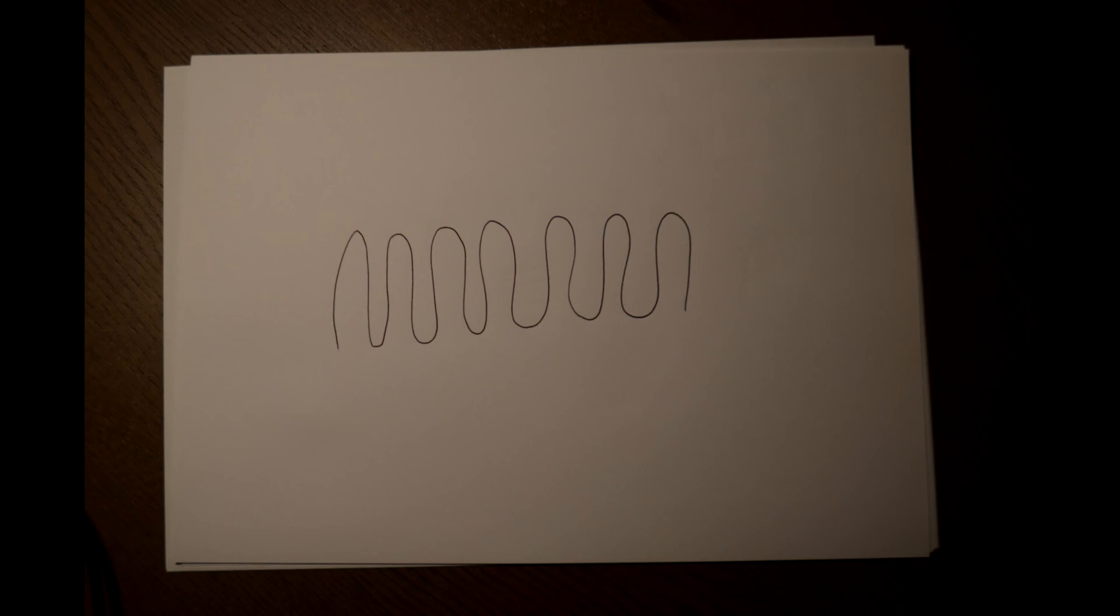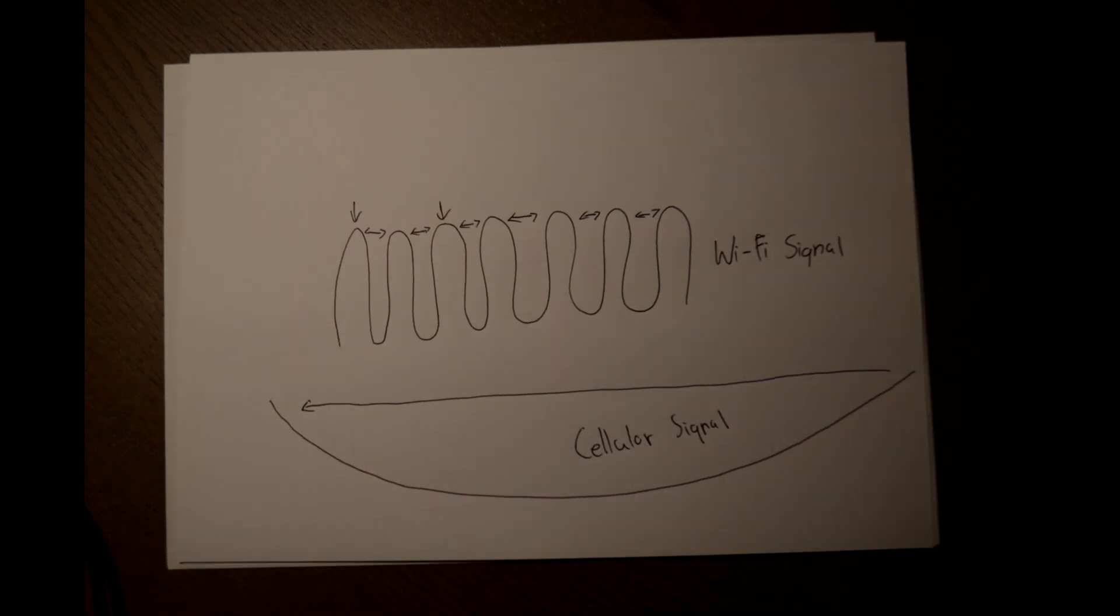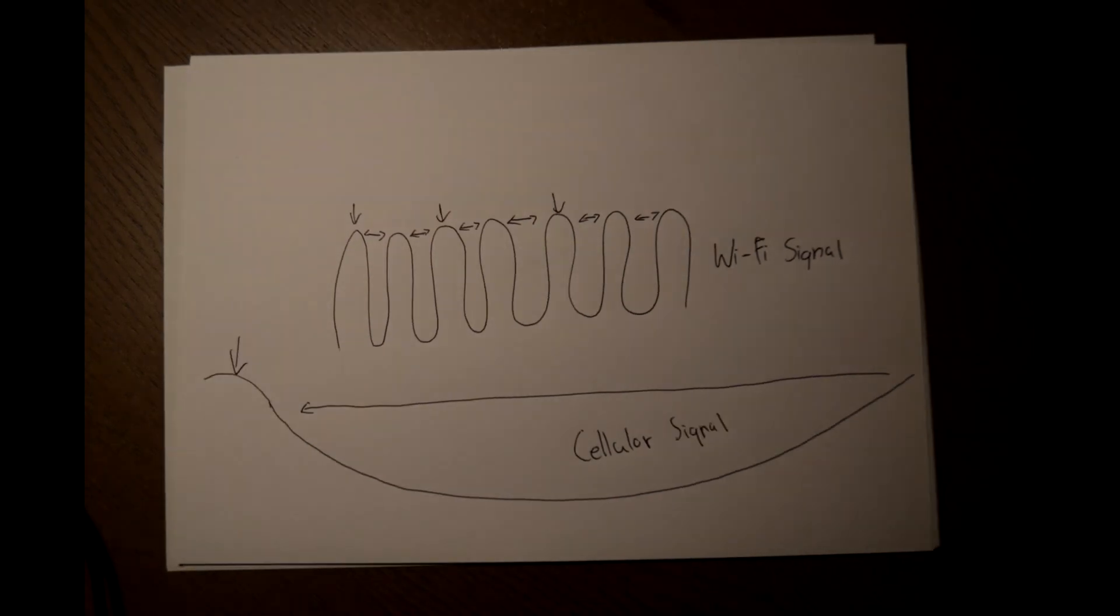Well, because Wi-Fi repeats at a much faster pace than cellular data, it allows more information to be delivered. In a radio signal, the amplitude or the height of the wave carries the information to and from your phone. Because Wi-Fi has so many different amplitudes being sent in this wave compared to your cellular data, it sends much more information in the same amount of time as a cellular signal.